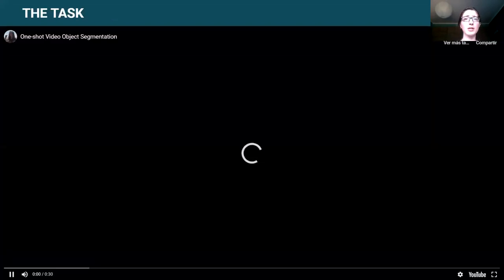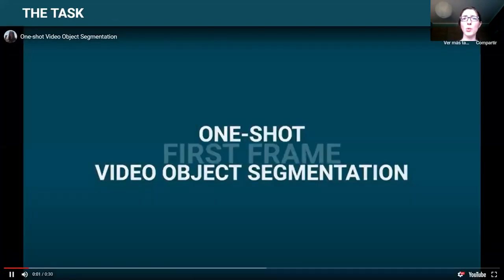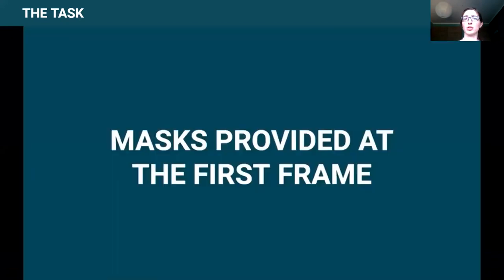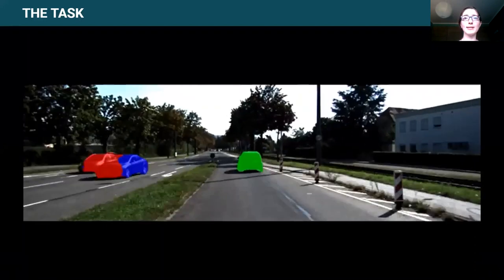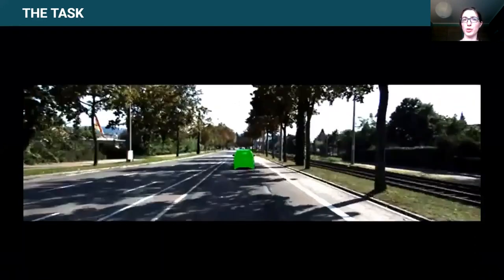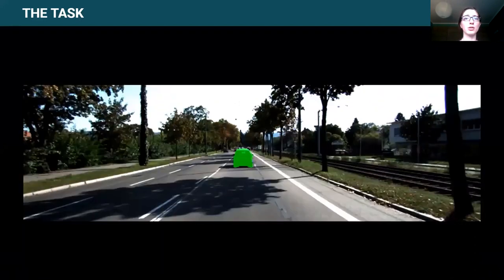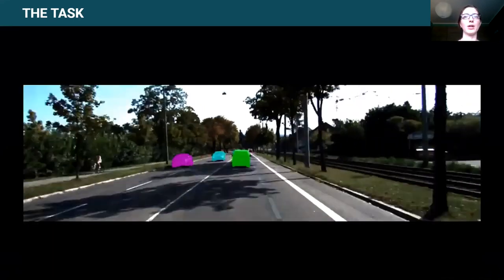The task is video object segmentation, where we have video sequences and we want to track the objects of interest within them. With one-shot learning, we provide to the model the mask of the first appearance of the objects of interest, and with that information, the model has to estimate the segmentation on the remaining frames.